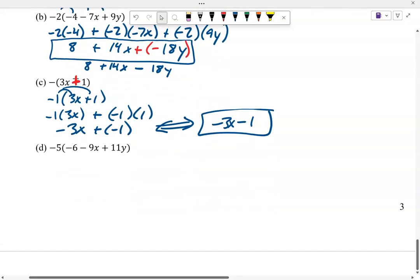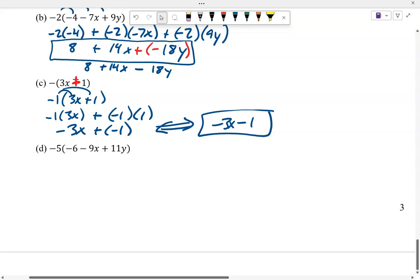Let's do this last one here. Negative 5 out front. And let's multiply it through. Negative 5 times negative 6 is a 30. Negative 5 times negative 9. Positive 45x. Negative 5 times 11y is a minus 55. Well, thanks so much for watching. See you next time.